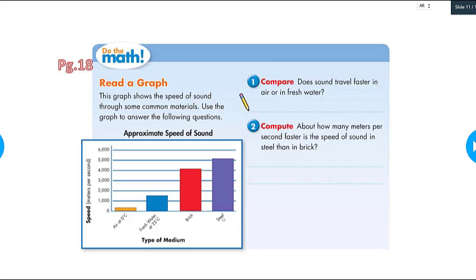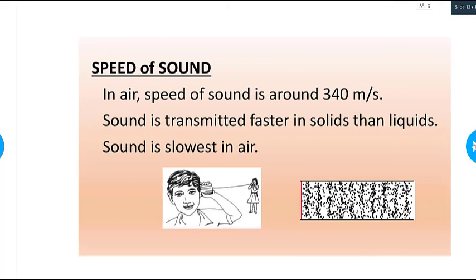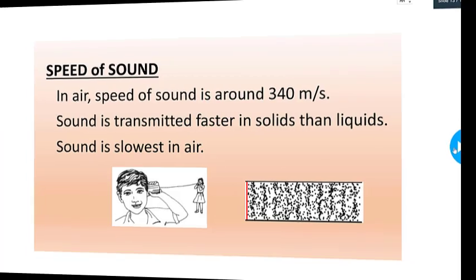So what's the conclusion about the speed of the sound through different materials or mediums is that sound travels faster in steel, in solids, than fresh water liquids, than air or gases. So the speed of the sound in air is about 340 meters per second. And sound is, as conclusion, transmitted fastest in solid than in liquid, and it's the slowest in air.